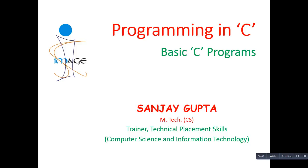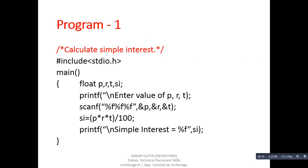Hello friends, I am Sanjay Gupta. In this tutorial we are going to discuss some basic C programs. Program number one: calculate simple interest. The first statement is known as a comment. The second statement is hash include stdio.h, which shows that we have to include a header file in the program.